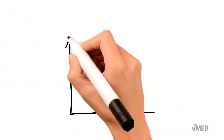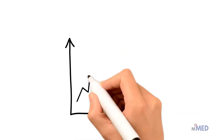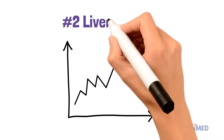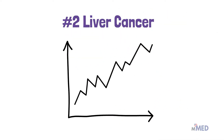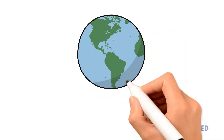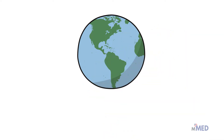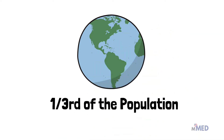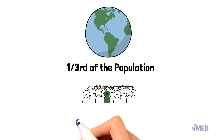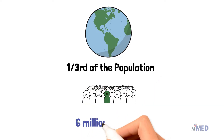Fatty liver disease is actually the second most common cause of liver cancer, and it will very soon be number one. About a third of the population has fatty liver disease, including up to 6 million children.